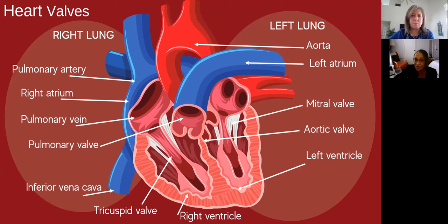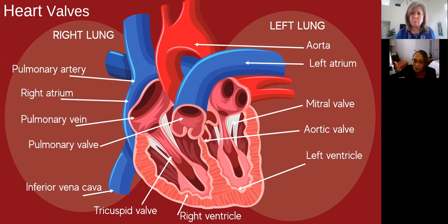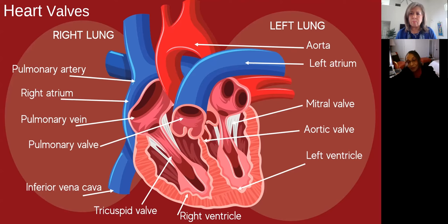Giving you a breakdown of how this happens — when we think about valvular heart disease, I want to focus on one particular valve, because of all the valves, this one will demonstrate how things happen with the others. We have the tricuspid valve, which is the valve that goes from the atrium — where blood comes in from the vena cava — into the right side of the heart, the right atrium, into the right ventricle, and then out into the lungs, coming back into the left side of the heart.